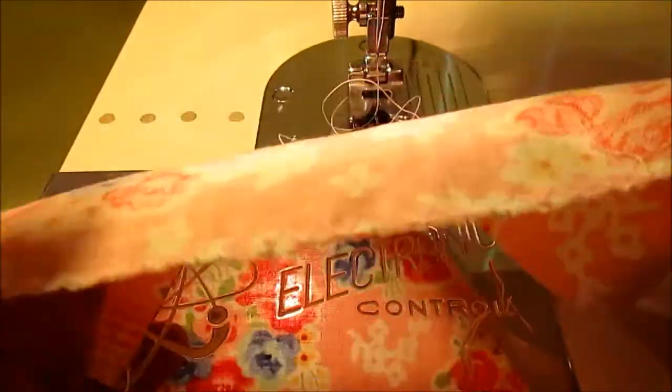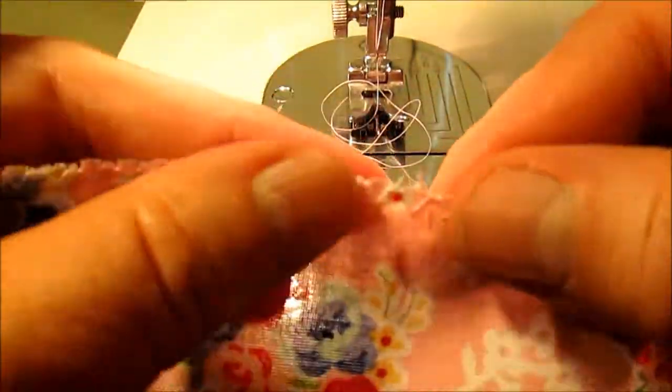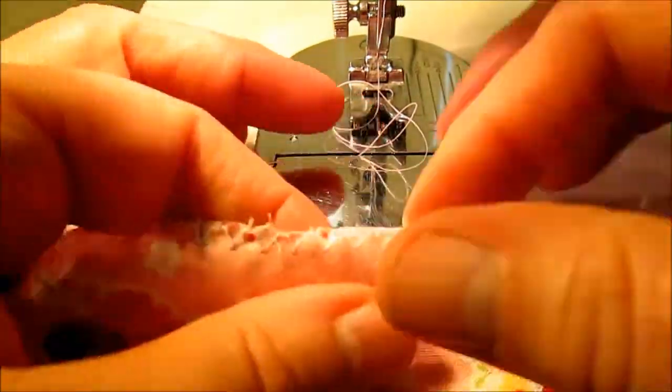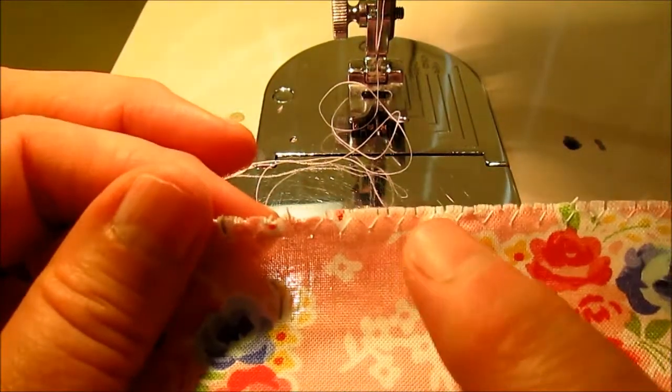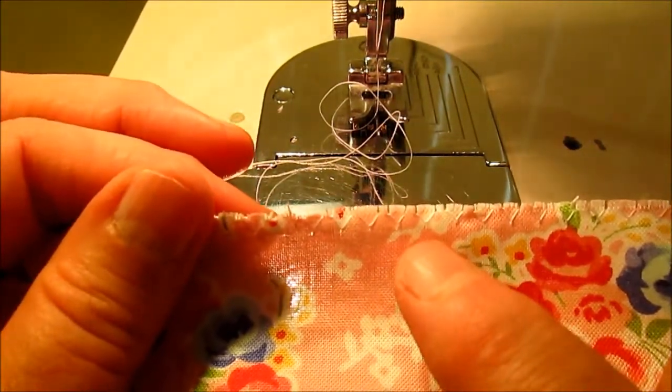It looks like this. All of those little raw edge pieces are captured and they're not going to be able to come unraveled. If you don't have a serger, this is the technique you're going to use.